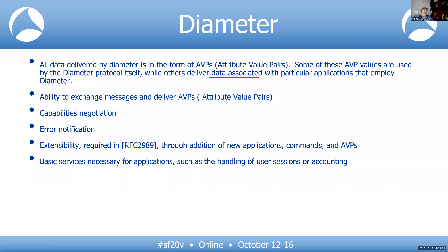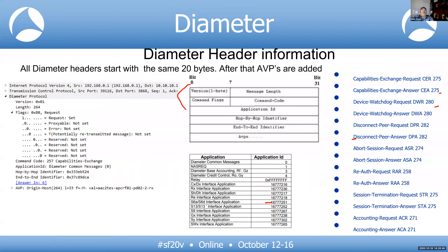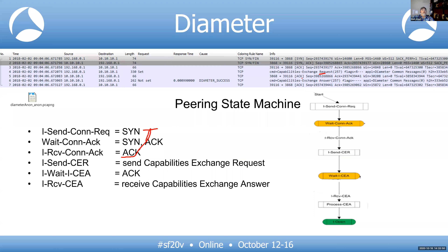Capabilities negotiation uses CER and CEA messages. A key rule: when a message name ends in R it's a Request, and when it ends in A it's an Answer. Whenever you send a request, you want to see an answer. Important: don't just filter for Diameter — filter on the stream itself. If you filter only on Diameter, you'll miss the TCP ACK entirely. If you send a request and get an ACK but no answer, the problem isn't the path. If you send a request and get neither an ACK nor an answer, then it's a path problem.